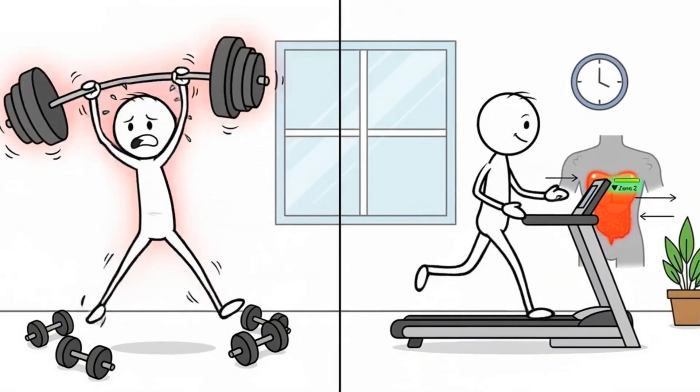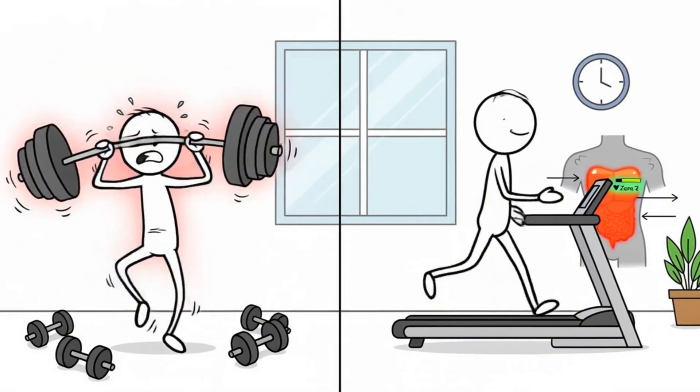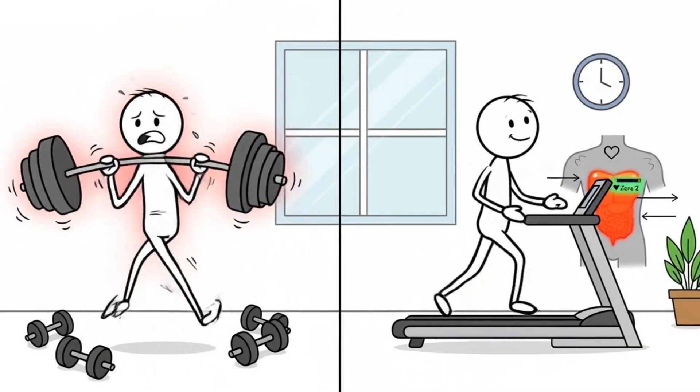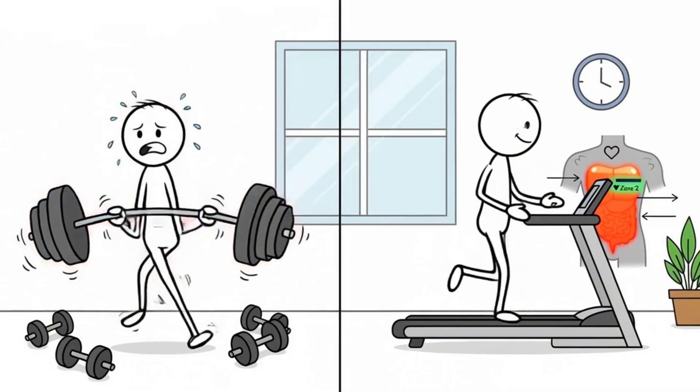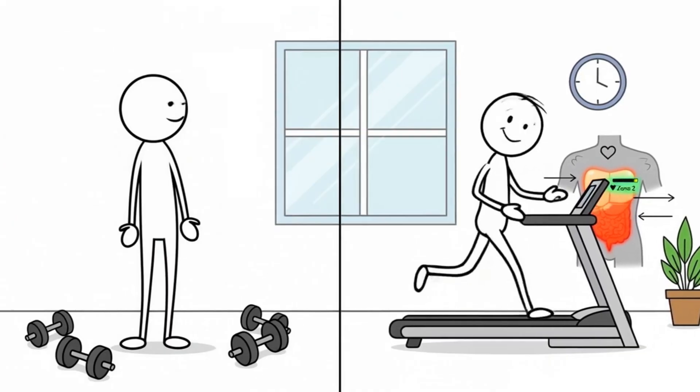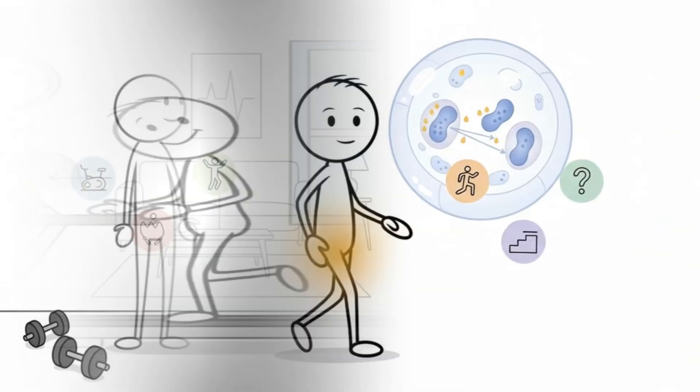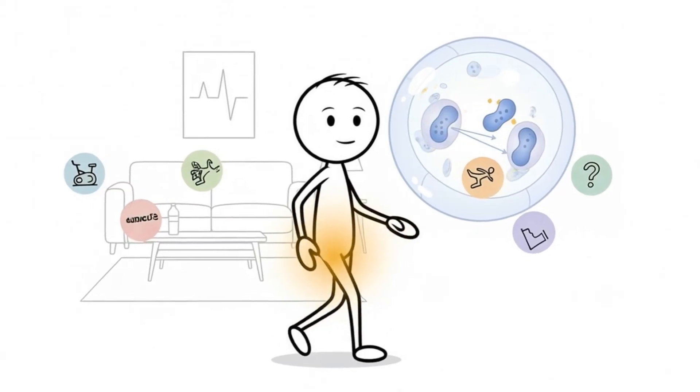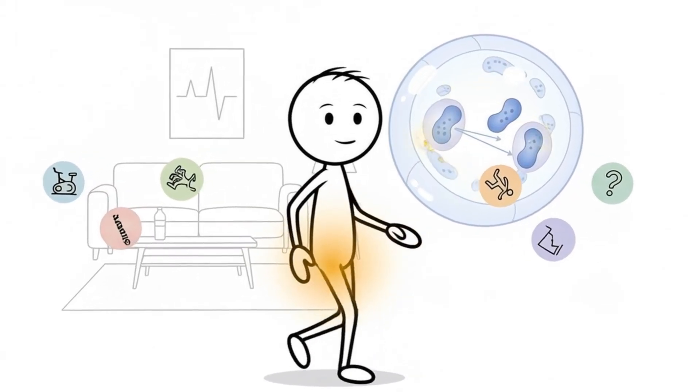Most people think burning visceral fat requires brutal workouts, but that's not really how the body works. Visceral fat is highly metabolically active, and the most efficient way to target it is through Zone 2 training, the sweet spot where your cells prioritize fat over glucose.